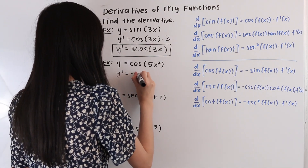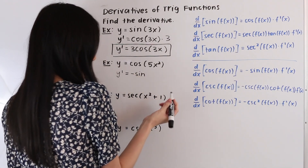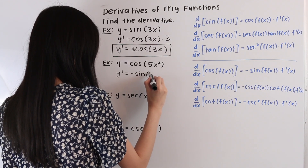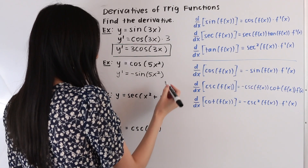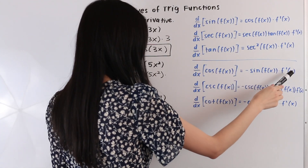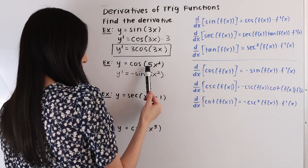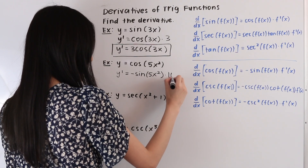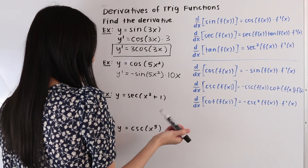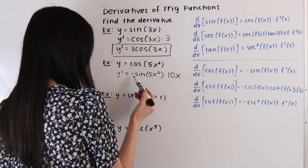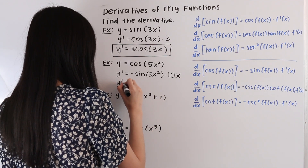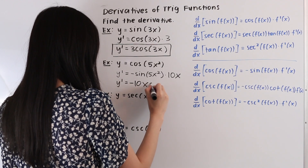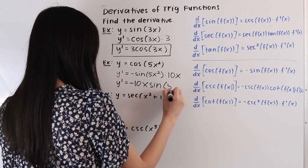So we have negative sine. And then we're going to keep the angle the same, so our angle here is 5x squared. And then we're going to multiply by the derivative of our angle. So the derivative of 5x squared is equal to 10x. And as our last step, let's go ahead and move this term out in front. So we have y prime is equal to negative 10x sine of 5x squared.